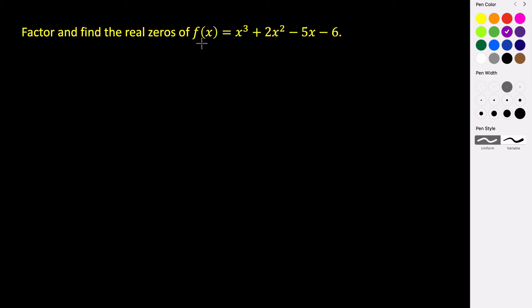For this problem we need to factor this polynomial function and find the real zeros. To do this we need to use the rational zeros theorem.